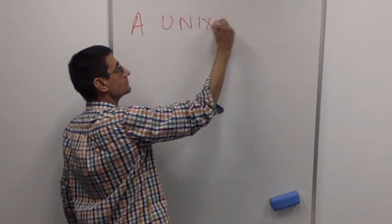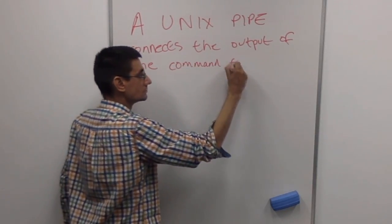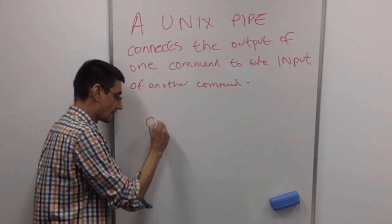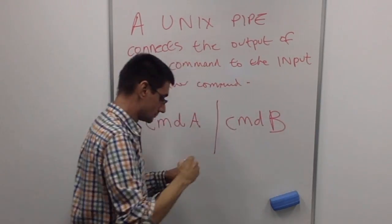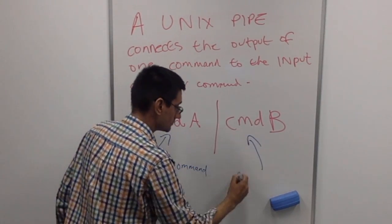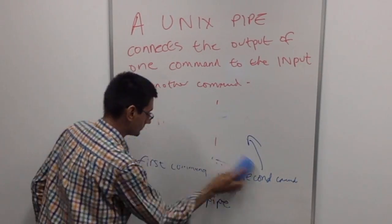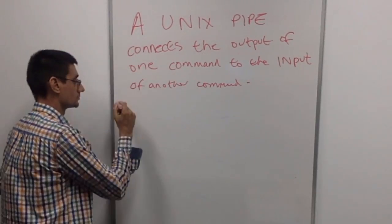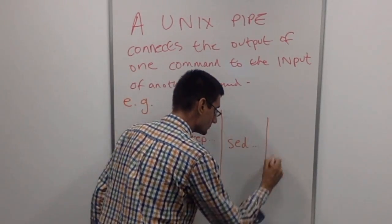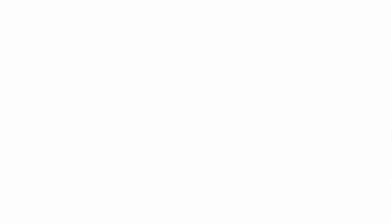Let's have a short debrief on that session. The key concept we thought about in this video was the Unix pipe. This is a way of connecting one command's output to another command's input. In the example we looked at, the curl command generated the original textual input, which was then filtered by grep and sed commands that reduced the amount of text, and eventually the text was printed to the output.